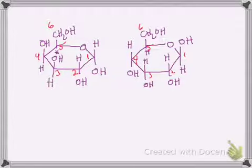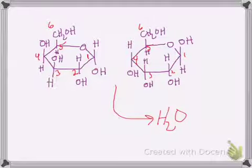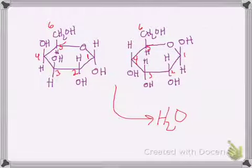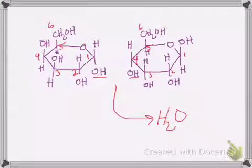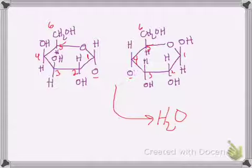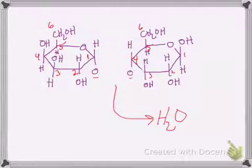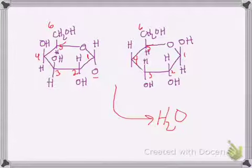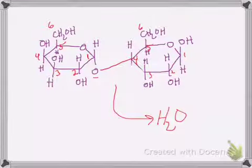When we connect two sugars together, a molecule of water is lost — two hydrogens and one oxygen. We need to steal two hydrogens and one oxygen from these structures. Since we're connecting the one carbon on the left to the four carbon on the right, we'll be using those hydroxyl groups to steal the molecule of water. We take the two hydrogens from those hydroxyl groups and steal one oxygen, and we're left with one oxygen to form the new bond.